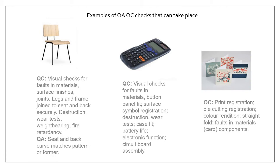Some examples of QA and QC in practice: for a wooden chair, quality control checks include visual checks for faults, checking materials for cracks, checking dimensions are accurate, and checking surface finishes, joints, and leg frames. Destructive wear tests apply pressure to ensure it doesn't collapse under use. Flammability tests and weight bearing tests — loading it with weight to see how much it can hold — are also used. Quality assurance for the chair involves making sure your moulds and jigs are all set up correctly and are the right size.